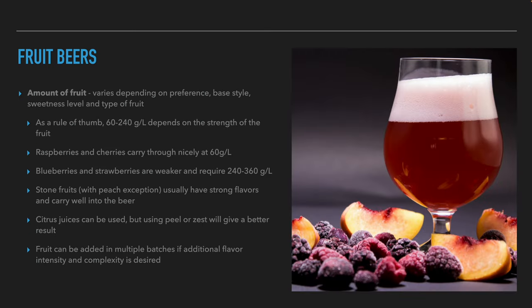Regarding how much fruit to add: the amount varies according to the brewer's preferences, the style of beer, and the sweetness and type of fruit. As a rule of thumb, brewers use 60 to 240 grams per liter, depending on the strength of the fruit — though some beers exceed 400 grams per liter. Raspberries or cherries usually require only 60 grams per liter, while blueberries and strawberries need 240 to 360 grams per liter. Stone fruits like apricots and nectarines add a lot of flavor, so less is used — with the exception of peach, which has less flavor and aroma than other stone fruits.